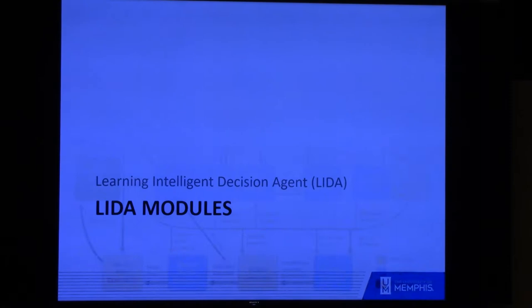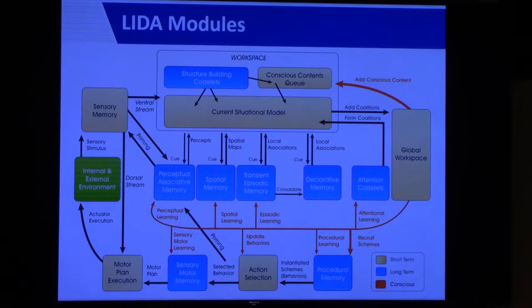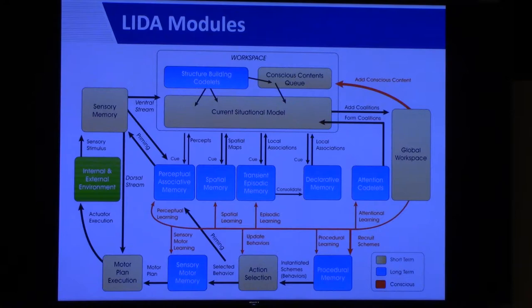So, LIDA modules. LIDA has a number of different modules. The diagram shown is probably the best way to get a single schematic that explains all the different modules and their interactions at a high level. The blue color indicates a long-term memory module, tan indicates a short-term memory module, and the orange arrows are part of the conscious broadcast and support learning. We'll go through a good subsection of these modules at a high level, explaining which ones support the different phases of the cognitive cycle.